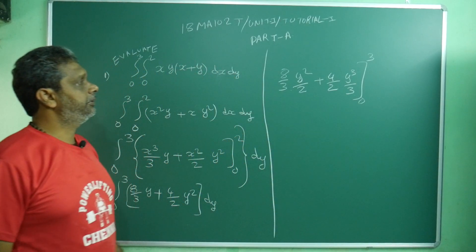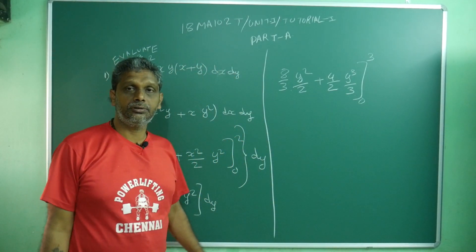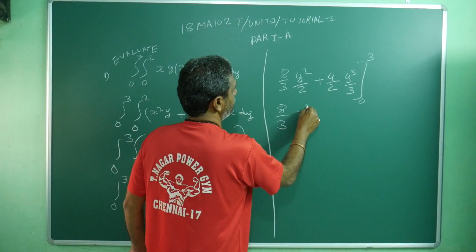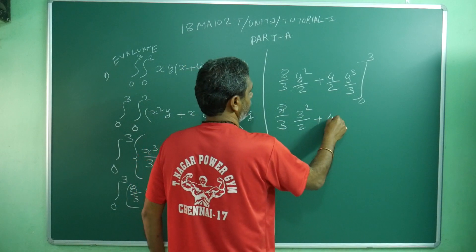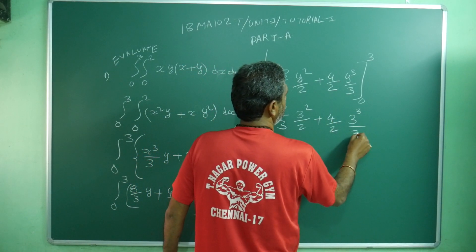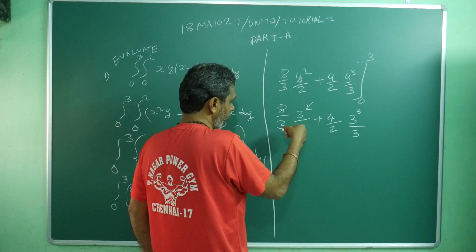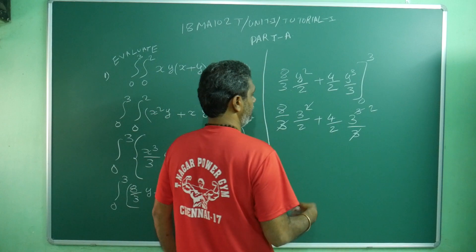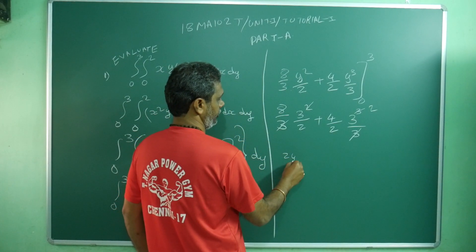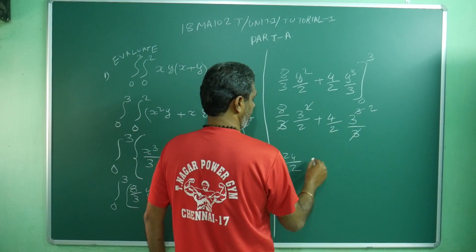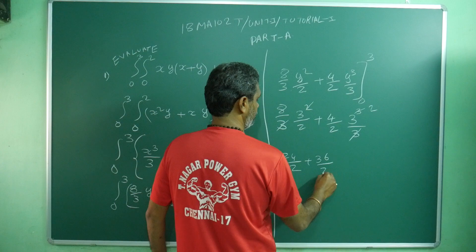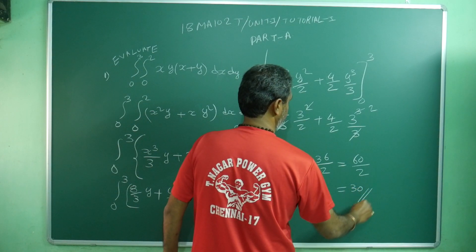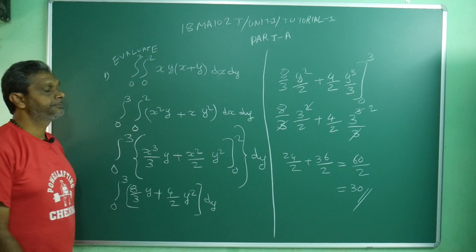Here also same story. Upper limit only valid, lower limit vanish. So what I will do: 8 by 3 times 3 squared by 2 plus 4 by 2 times 3 cubed by 3. This square can cancel, this 3 you can cancel, 1, 3 cancel. So what is the answer? 24 by 2, then 4 by 2 into 9 plus 36 by 2. This is equal to 60 by 2 equals 30. This is the first result.